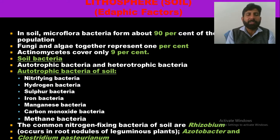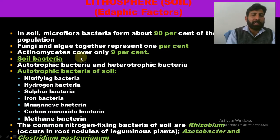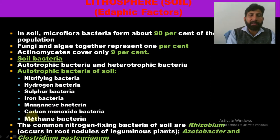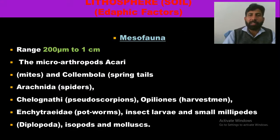Soil bacteria may be autotrophic or heterotrophic. Autotrophic bacteria in soil include nitrifying bacteria, hydrogen bacteria, sulfur bacteria, iron bacteria, manganese bacteria, carbon monoxide bacteria, and methane bacteria. Common nitrogen-fixing bacteria in the soil include Rhizobium in root nodules of leguminous plants, Azotobacter, Clostridium, etc.